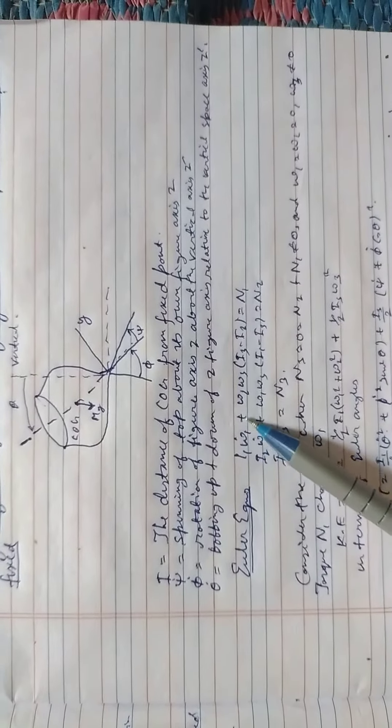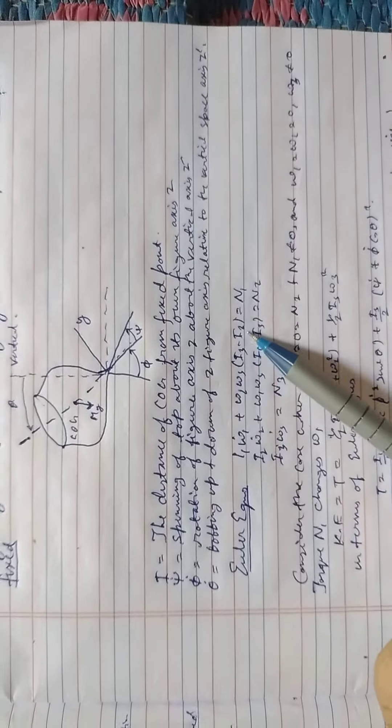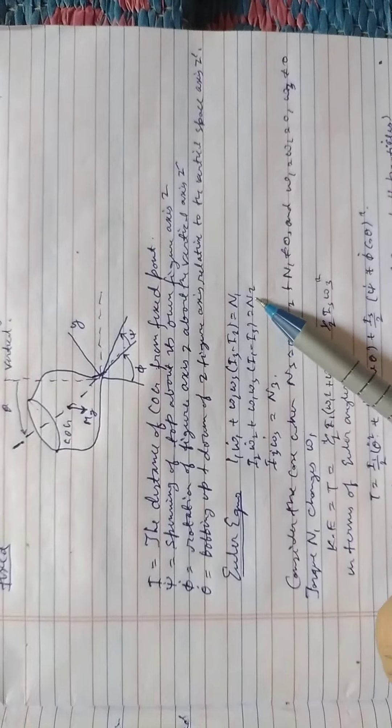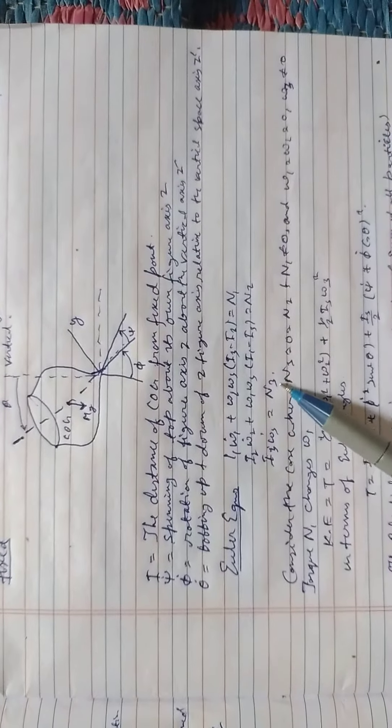Euler's equations: I1 omega 1 dot is equal to plus omega 2 omega 3 times I3 minus I2 is equal to N1. I2 omega 2 dot plus omega 1 omega 3 times I1 minus I3 is equal to N2. I3 omega 3 dot is equal to N3.